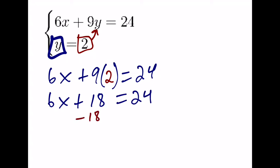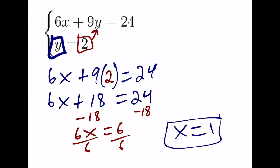From here, we subtract 18 from both sides, 6x is now equal to 6. When we divide both sides by 6, we get x equals 1. Do we know what y is? Sure, from our original equation, we know that y is equal to 2. So we're done.